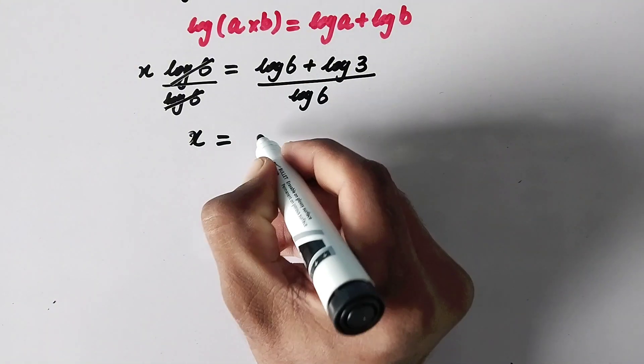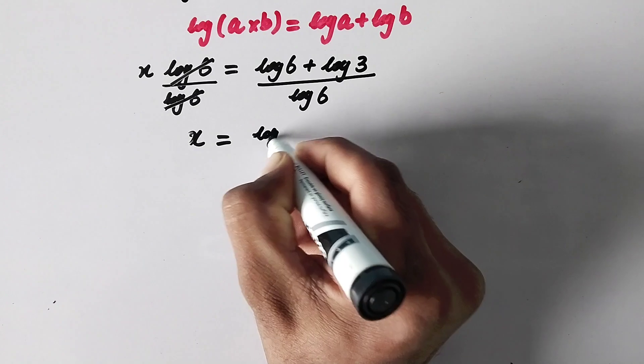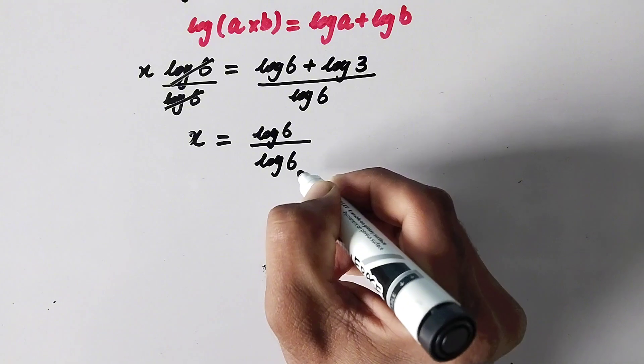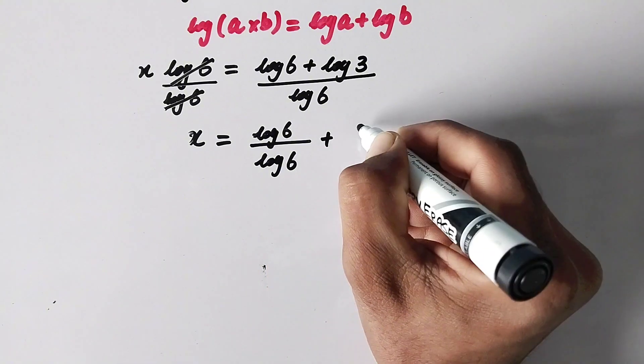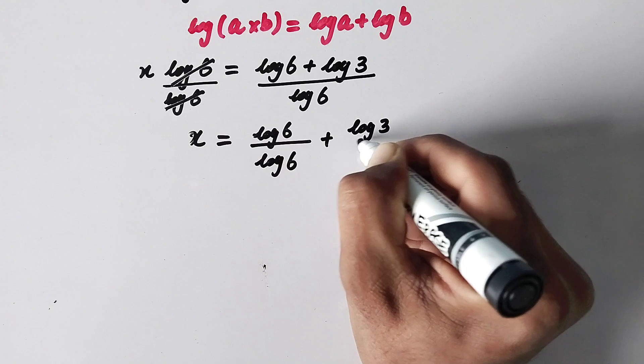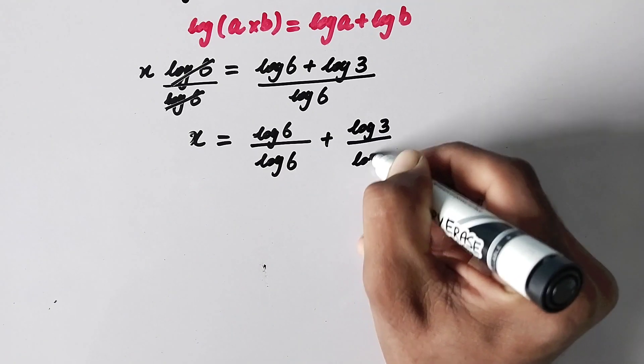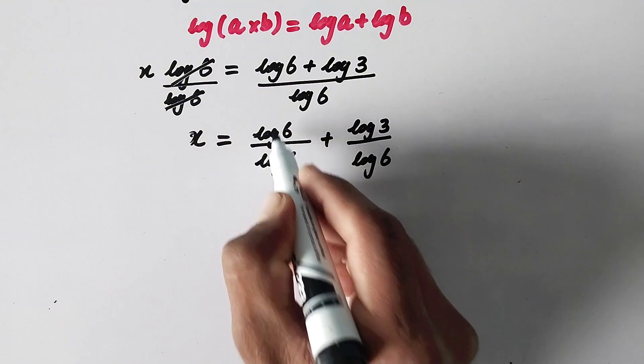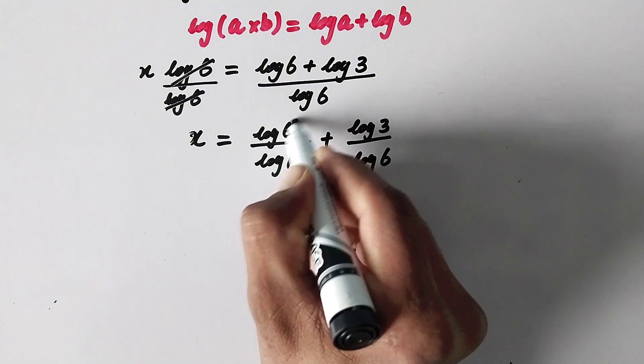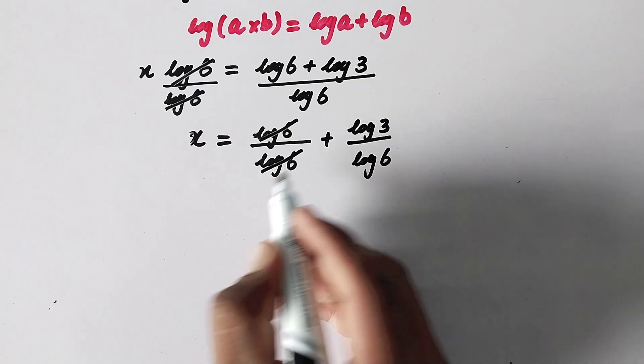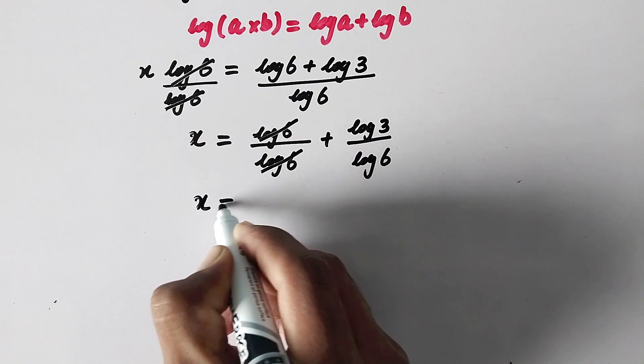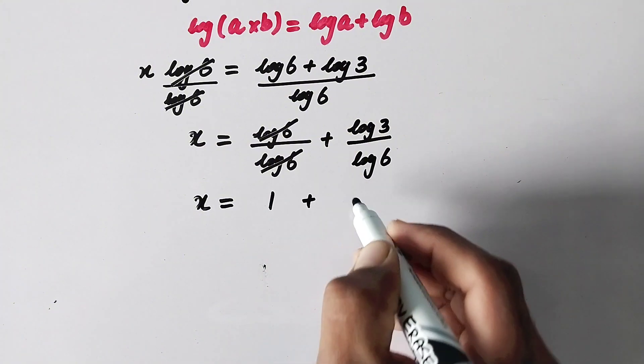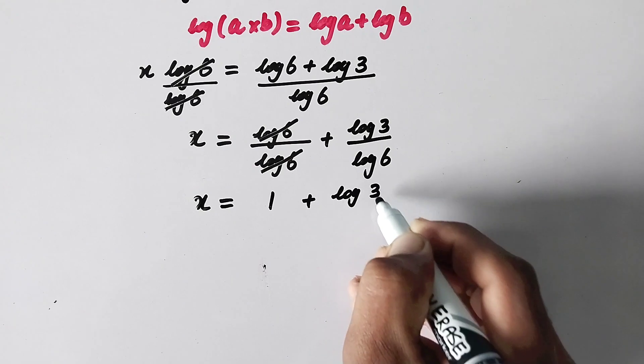x will be equal to log of 6 over log of 6 plus log of 3 over log of 6. Now this value and this value are the same, so they will cancel out each other.